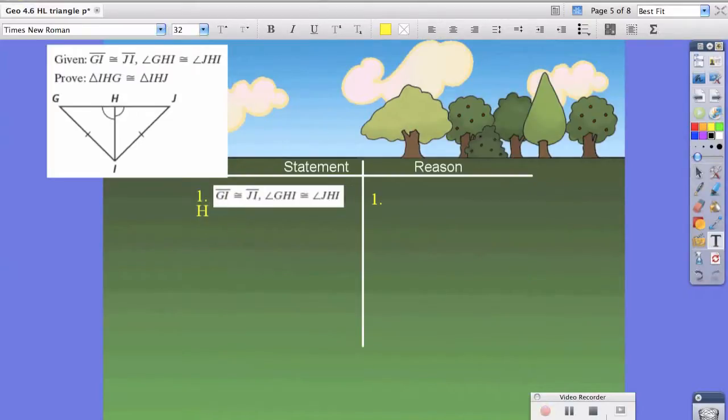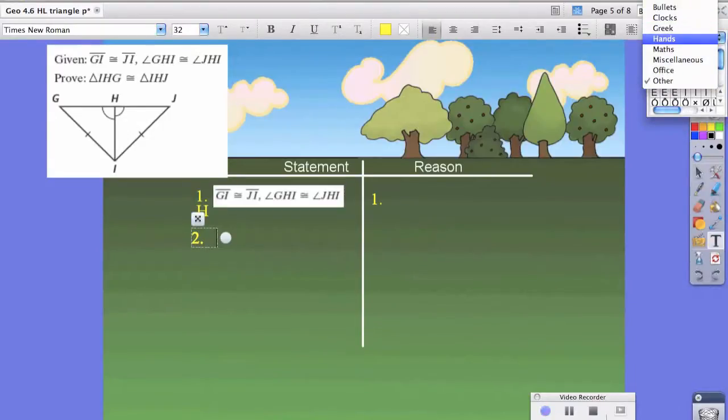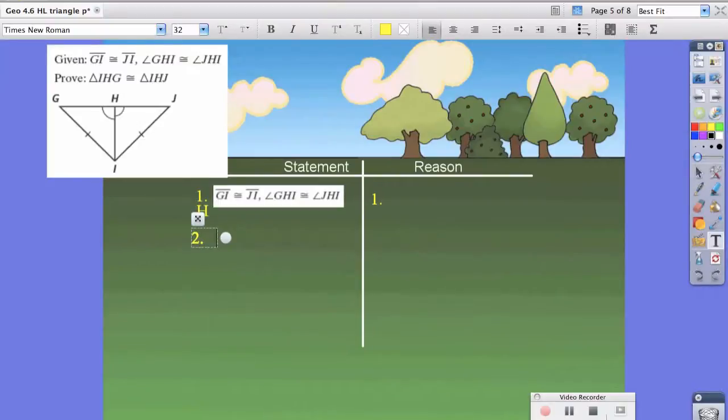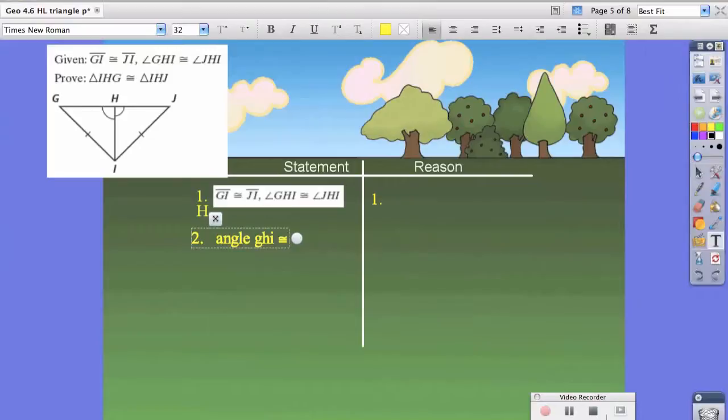Now, notice it says angle GHI and angle JHI are congruent. Because that's true, we have to show that... We're going to say angle GHI is congruent to angle IHJ. Oh, oops, I'm sorry. We're going to say those two angles add up to 180 degrees.